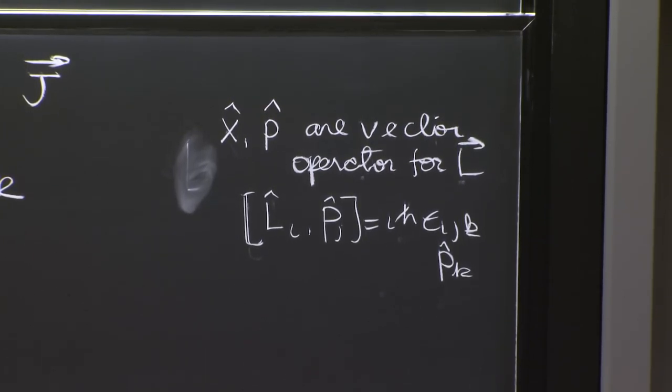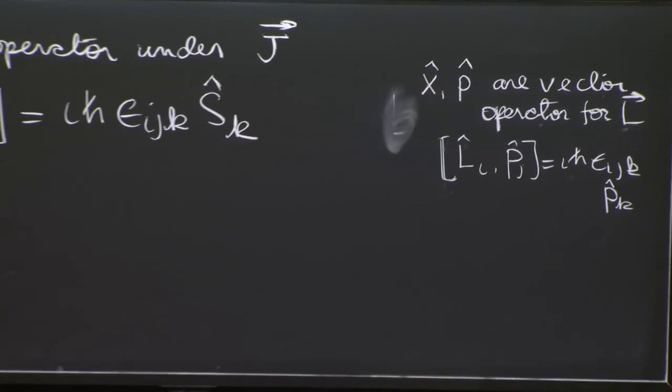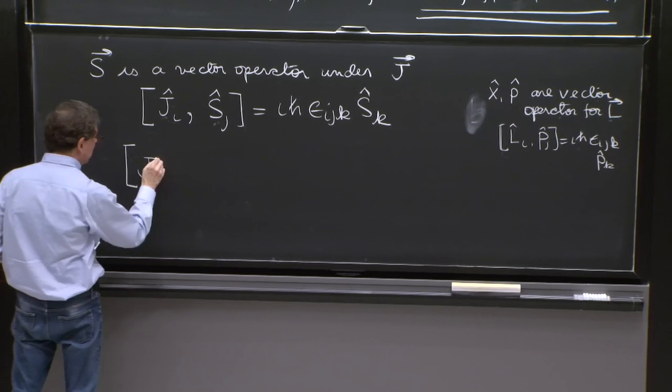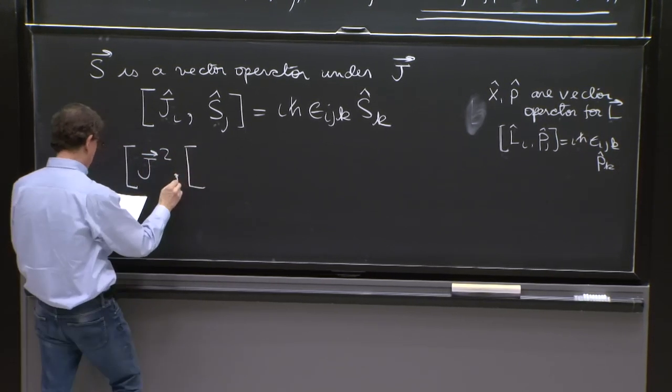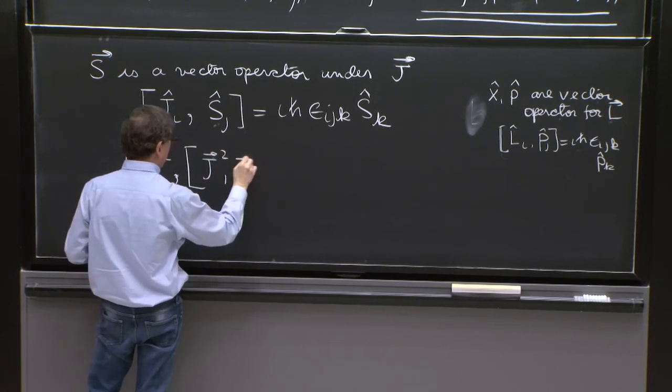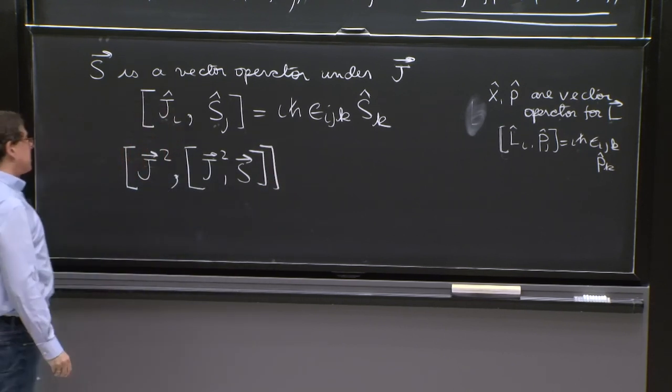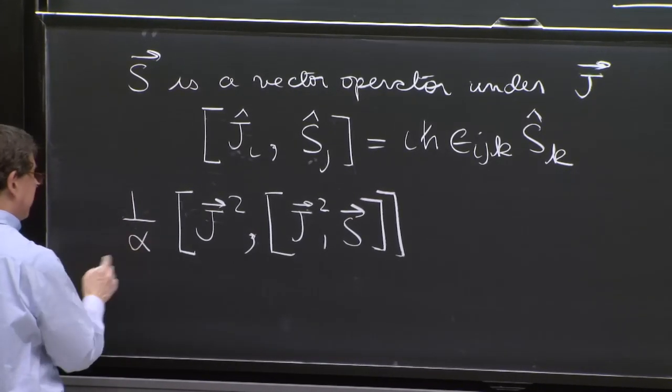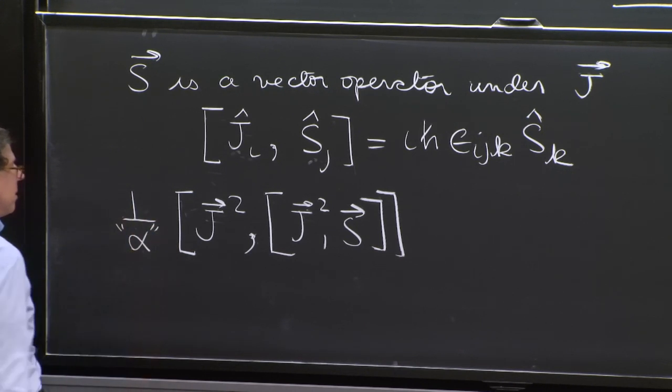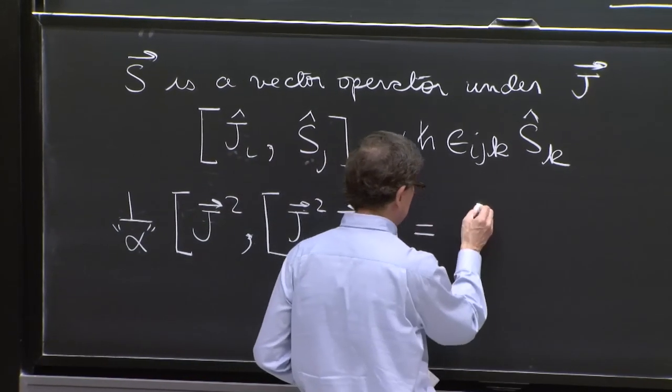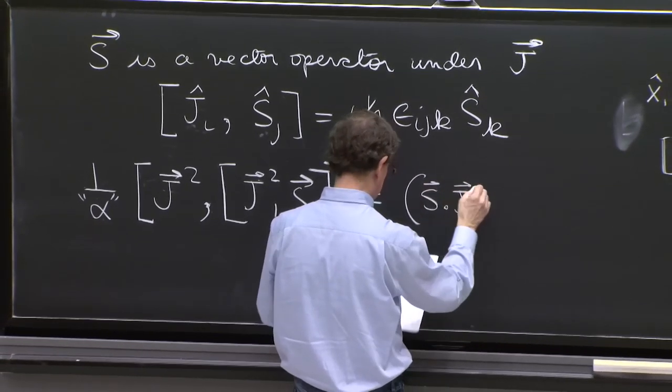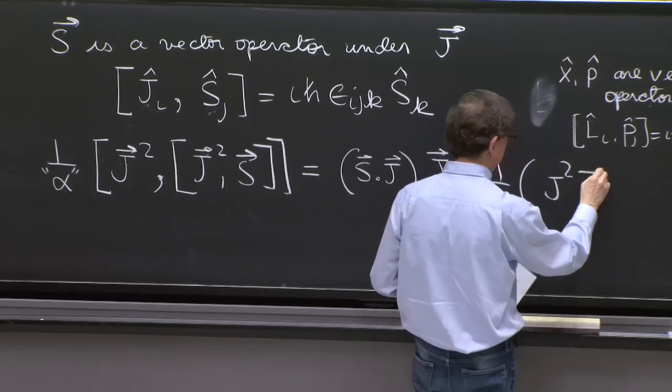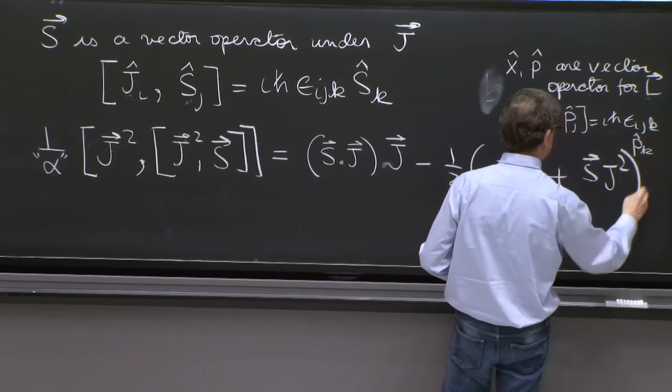If you have vector operators, they have a very peculiar property sometimes. One that may sound a little unmotivated, but it's very useful, is the following. Suppose you form the double commutator of J squared with the vector operator S. Here, you will find an identity. And to make it fun for you, I will not tell you the number that appears here. It's some number.